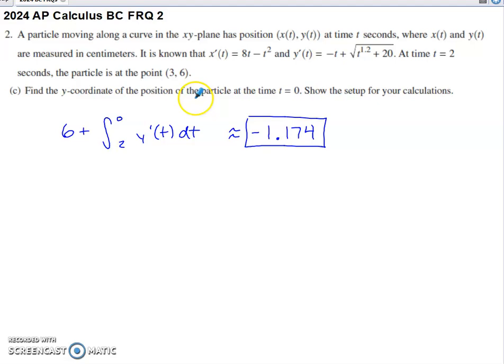Part C asks us to find the y-coordinate of the position of the particle at time 0. Show the setup for your calculation. So we know the y-coordinate is 6 at time 2.